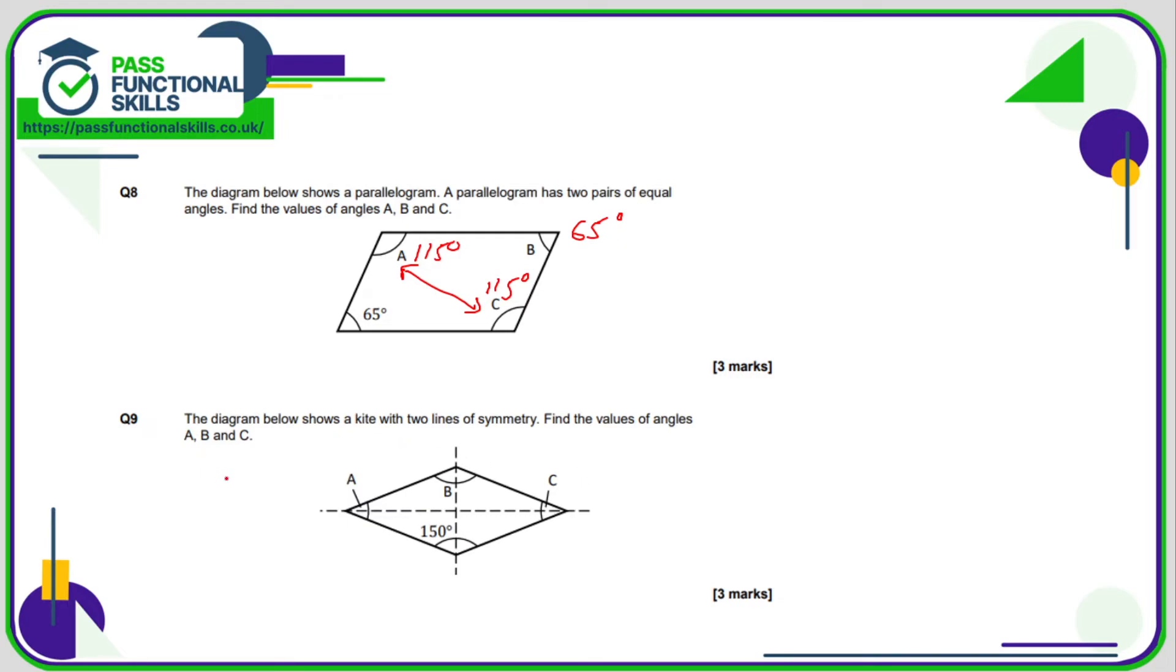Question nine - the diagram shows a kite with two lines of symmetry. Since it's symmetrical both vertically and horizontally, angle B is the same as 150 degrees. This is a four-sided shape, so the angles add up to 360 degrees. So far we've accounted for two angles, which together are 300 degrees.